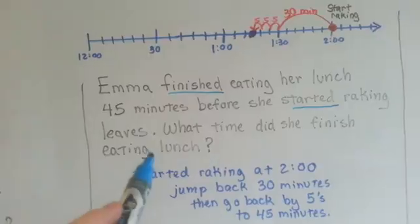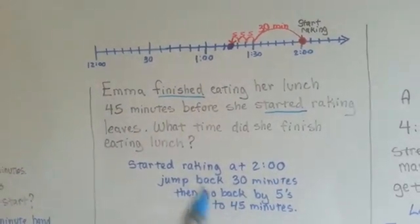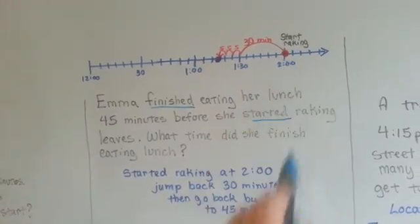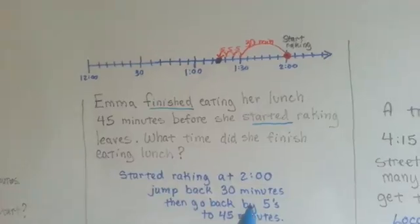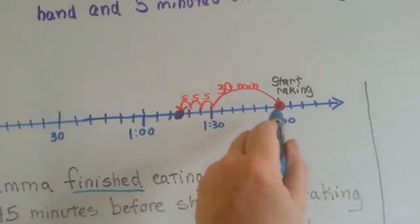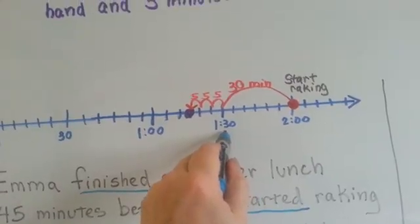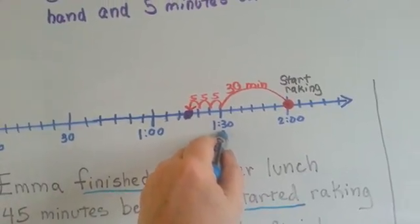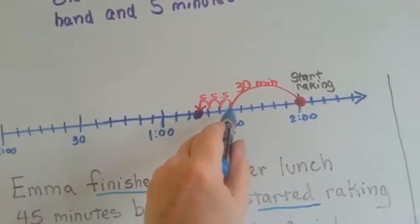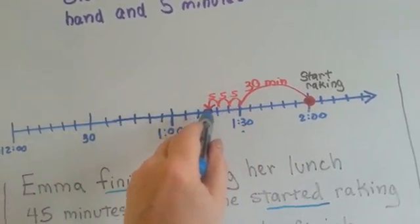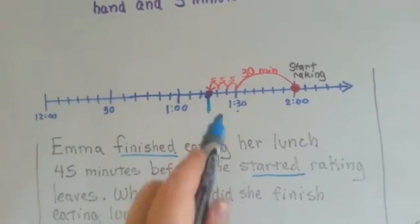So we need to go back 45 minutes from 2 o'clock. She started raking the leaves at 2 o'clock. We need to go back 30 minutes and then count by fives to 45. So from 2 o'clock, if we jump 30 minutes, it would be 1:30. Now we need to count back by fives until we get to 45. So the first jump is 30 minutes and now we count by fives: 30, 35, 40, 45. And it puts us right here. So what time is that?